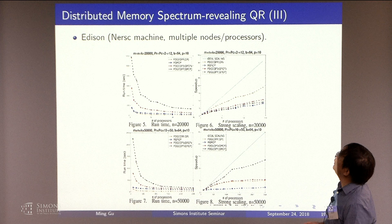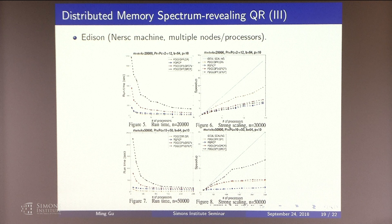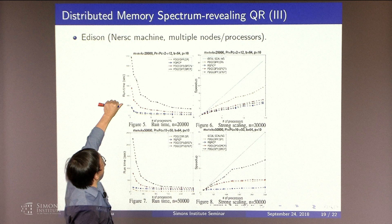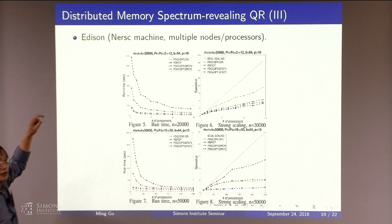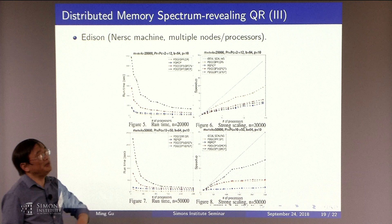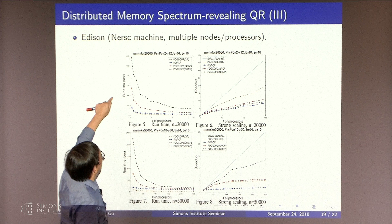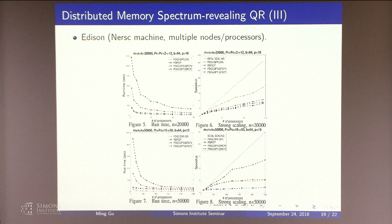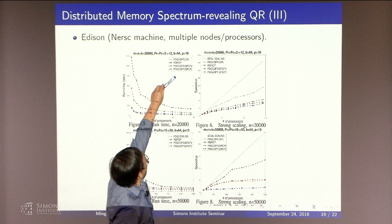So this is distributed memory implementation of the spectrum revealing QR. So what you see here is a 20,000 by 20,000 matrix. And here we take the rank to be 20,000 as well. So the layout is that we have the same number of rows. It's a square layout. Like the PR is the number of processes. And the PC is the number of processes as well. So you have a square layout of the processes. And the block size is 64. The P is 10. You can think of this as some kind of L related parameter in this calculation.